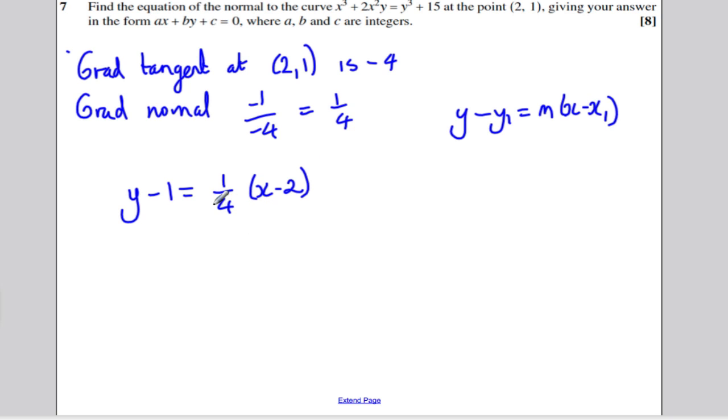We're nearly home now. Multiply everything by 4 to remove that fraction. I get 4y minus 4 is equal to x minus 2.